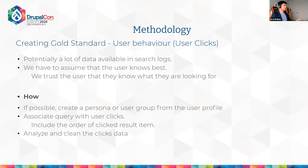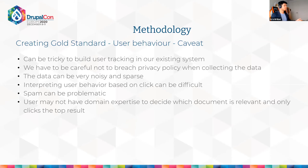With user clicks you can collect a lot of data, but you have to assume the user knows best. The process is: create personas, associate queries with user clicks including order, then analyze and clean the data since it can be noisy. Caveats include: data can be noisy, it's not easy to interpret user behavior from clicks, spammy searches can be problematic, and in the GDPR era you must be careful with privacy policy when collecting data. Also, users may not be the best experts on which document is relevant, and they often only click the top result.